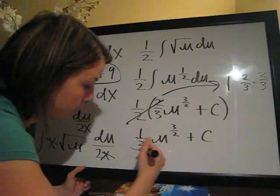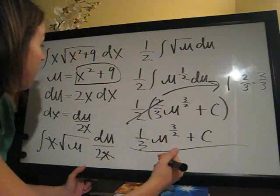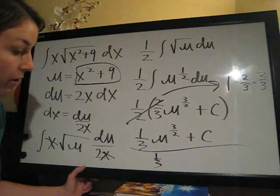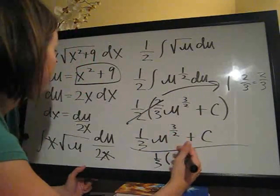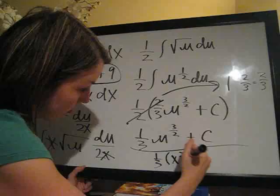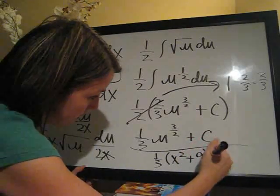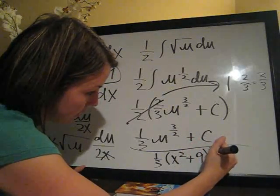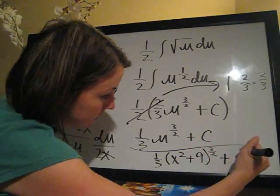So, our final answer is going to be, sorry if it's kind of small, 1 third times x squared plus 9 to the 3 halves plus c.